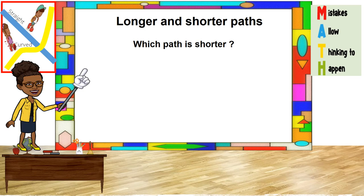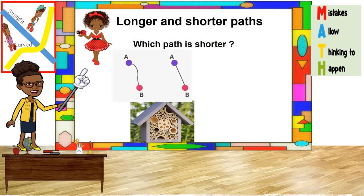Now, let us look at longer and shorter paths. Look at the different paths that Molly can use to take her ladybug home. Molly can use the curved path and she can use the straight path. Which of these paths do you think is shorter? Good thinking, boys and girls — the straight path is shorter.